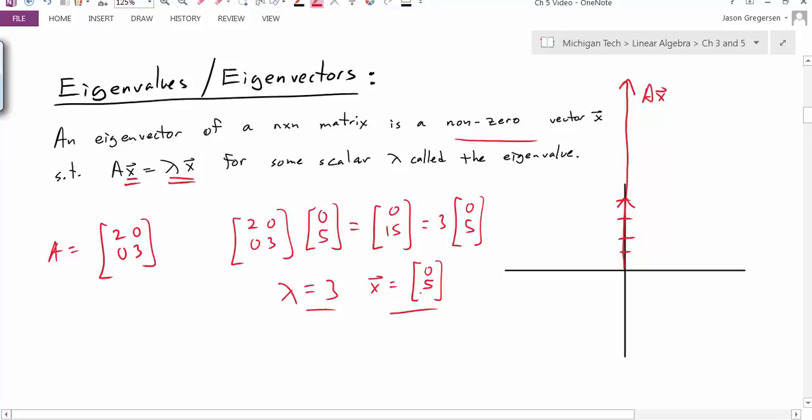And I could do the same thing with other vectors: [0, 6], [0, 7], [0, 8]. All of those would be eigenvectors associated with this eigenvalue.